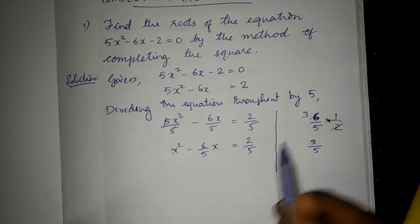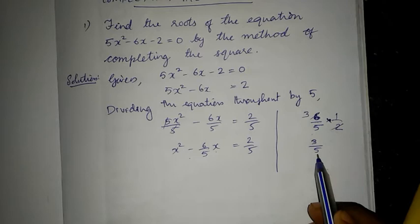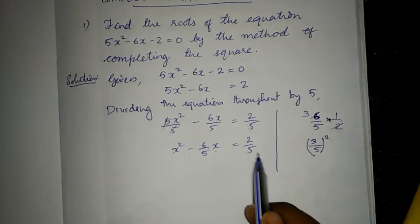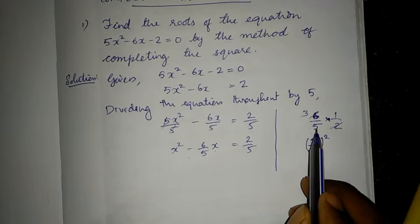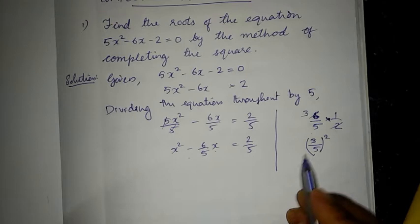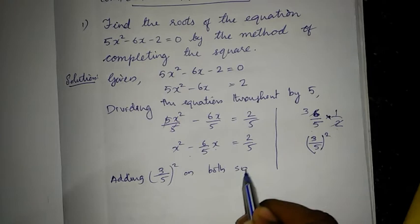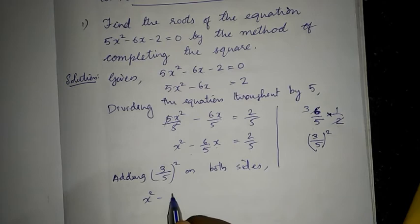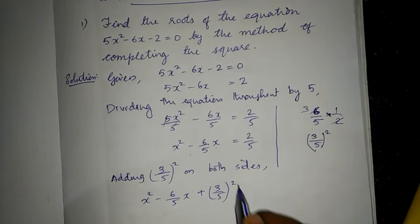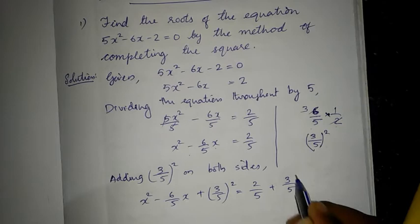Take the coefficient of x, take half of it — you got 3/5 — then find the square of that half. This number, which is half the coefficient of x, its square must be added to both sides. So we are adding (3/5)² on both sides: x² minus (6/5)x + (3/5)² = 2/5 + (3/5)².